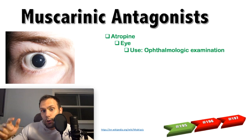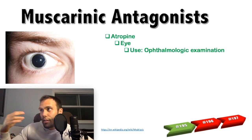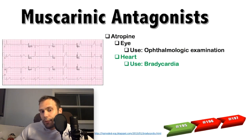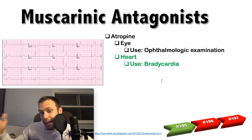Now let's talk about specific drugs used as muscarinic antagonists. Starting with atropine, which is probably the most high-yield. It can be used in the eye — as a muscarinic antagonist it causes dilation, pupillary dilation and cycloplegia, and is used in ophthalmologic exams to see structures that wouldn't normally be visible. Atropine also has effects on M1 and M2 receptors, particularly M2 receptors at the heart. Cholinergic activity causes bradycardia, so atropine as a muscarinic antagonist can treat bradycardia.